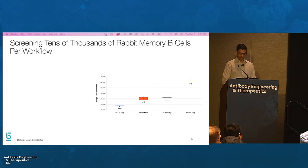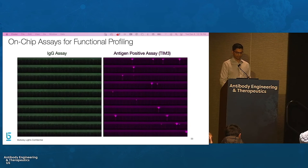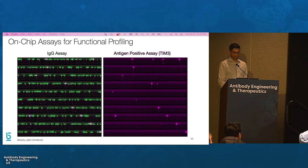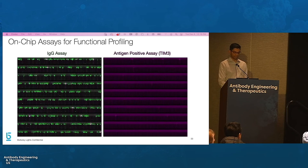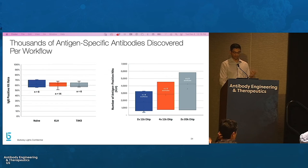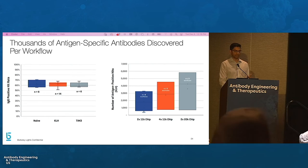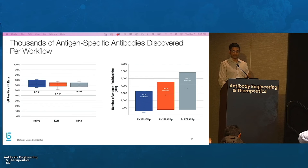Similar to mouse workflows, after loading, activated rabbit B-cells can be screened using on-chip assays for antibody specificity and cross-reactivity. The videos here depict secretion assays from activated B-cells using a model soluble antigen, TIM3 — in green is an assay for IgG secretion, while in purple is an assay for antigen specificity against TIM3. The bead-based assays for IgG secretion can be used to assess successful activation of memory B-cells. From dozens of workflows performed on samples from unimmunized rabbits as well as rabbits immunized with either KLH or TIM3, the majority of activated cells secrete IgG antibodies, and this high activation rate enables discovery of hundreds to thousands of antigen-specific antibodies.